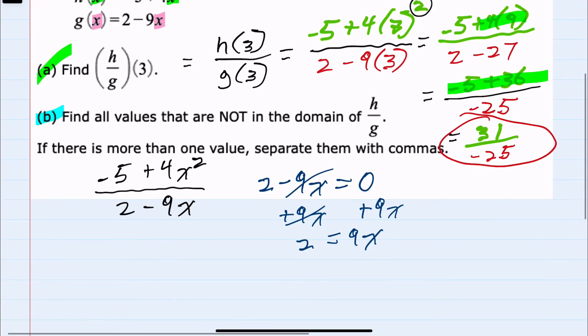I know that when x = 2/9, our denominator would be 0. So we want to exclude that from the domain. For part (b), the values that are not in the domain would be the single value 2/9.